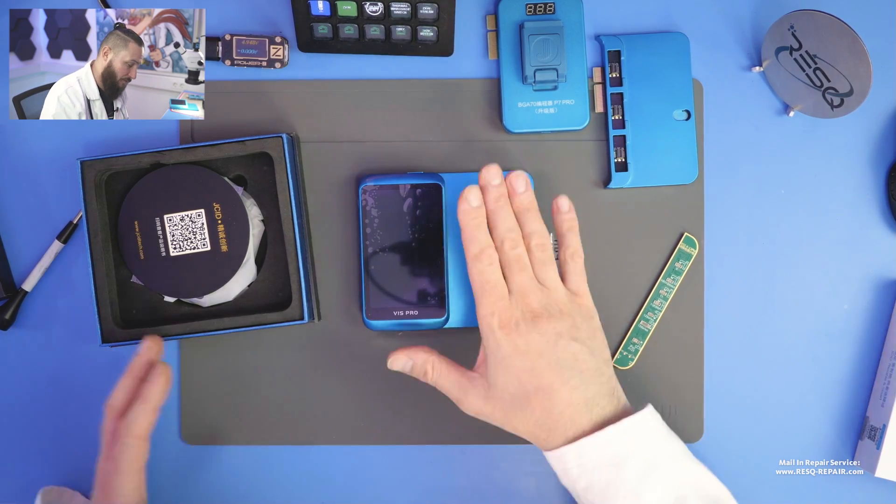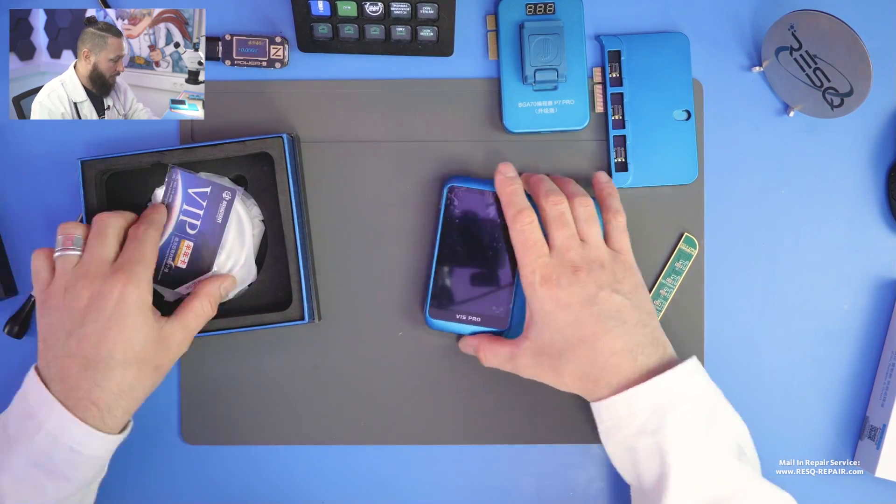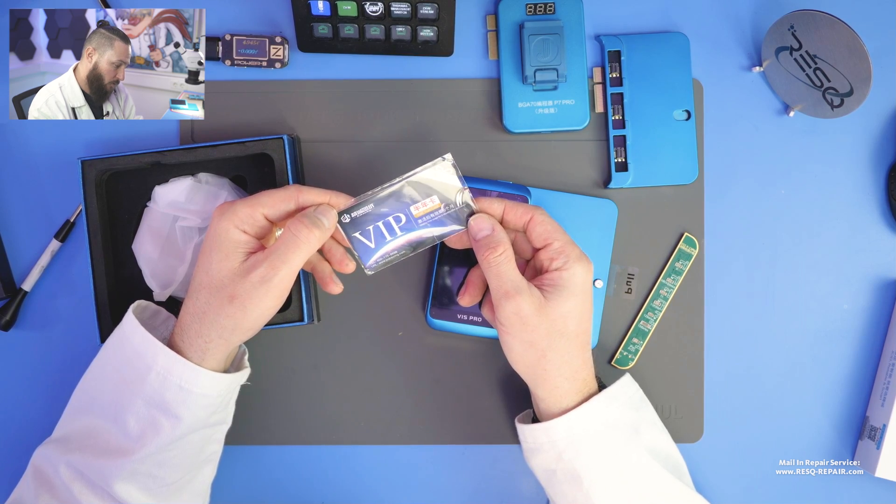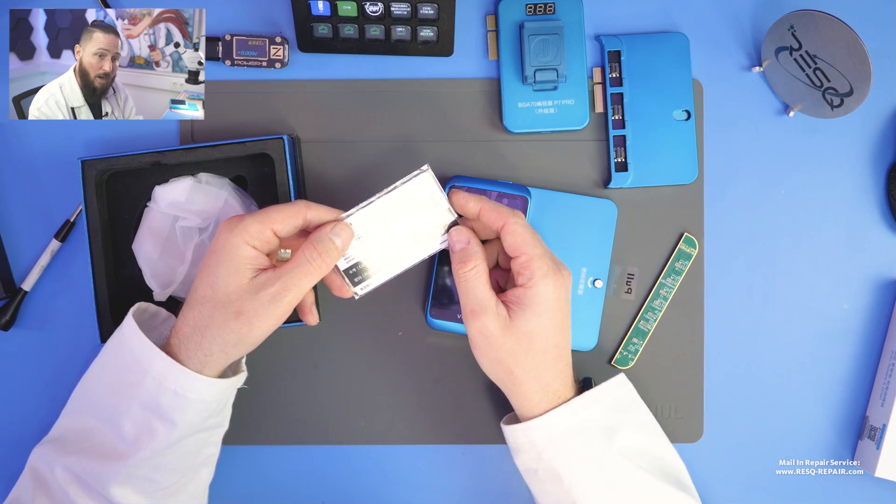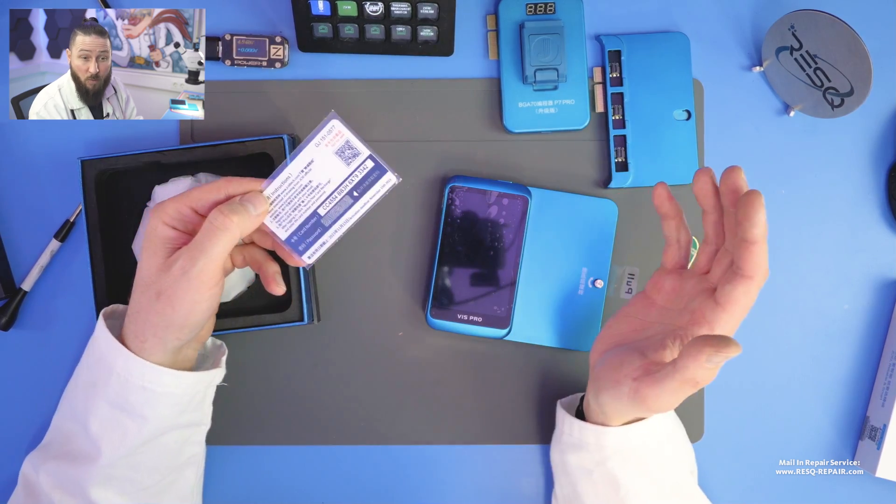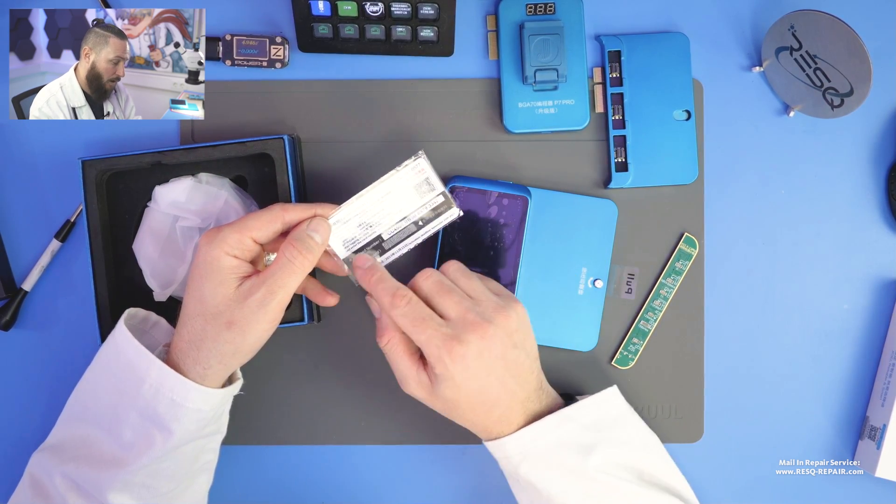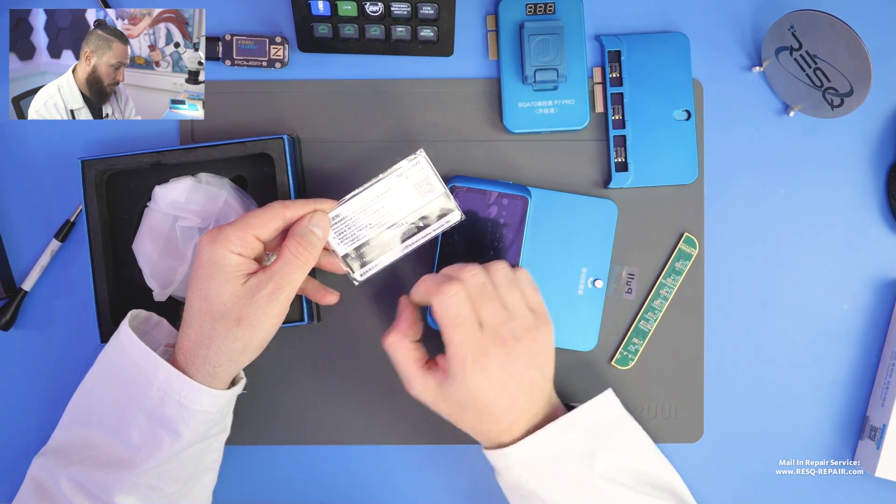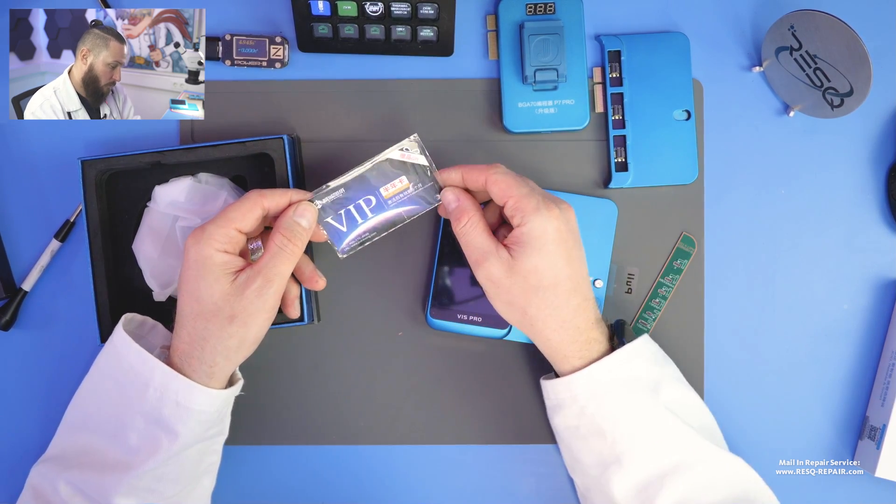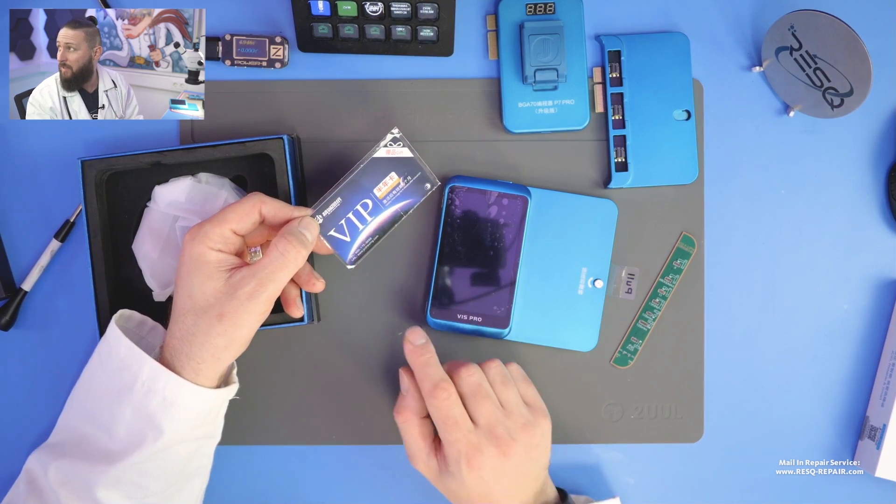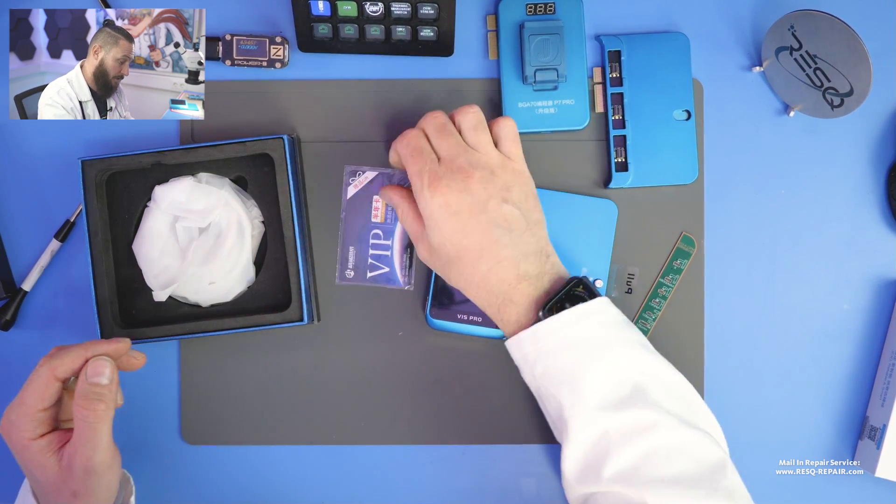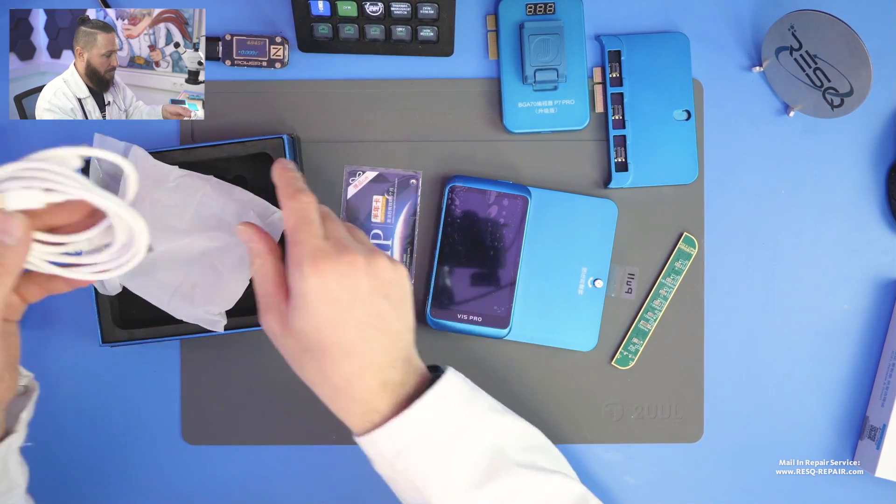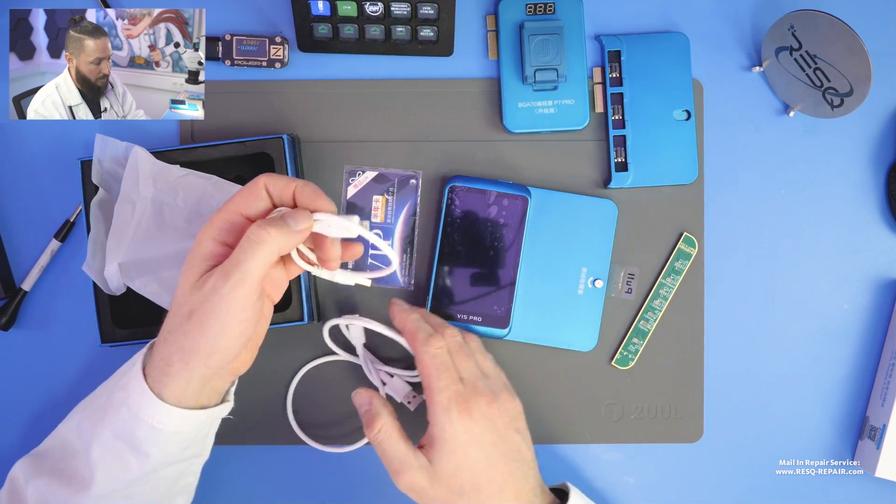This is something the V1S Pro is able to do. What we have within the package is a VIP card for using with the JC Draw software. It's a board view file program. You can download it on the JC website and with that card you get six months free access for the JC Draw software. The next thing we have in here is just a cable where you can connect the iPhone to your V1S Pro, and here a charging cable.